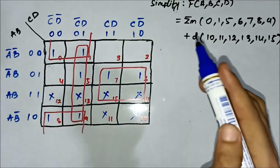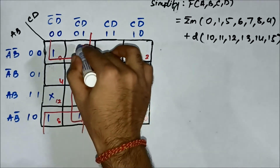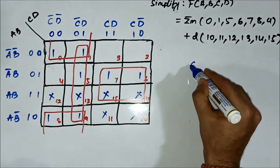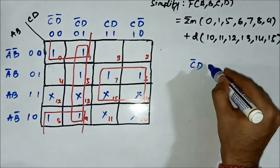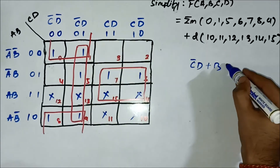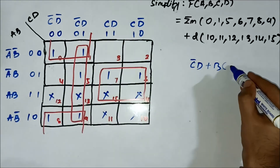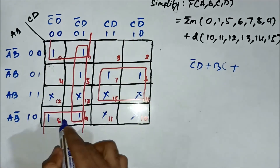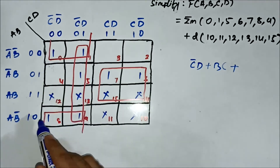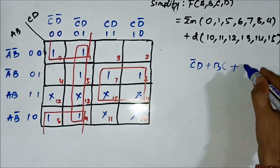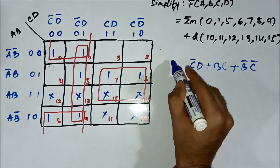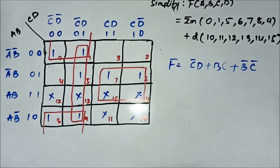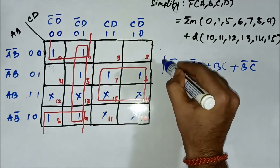Now we identify the common variables. For this quad, in the horizontal side we have C̄D common; the vertical side has nothing. For the next quad, in the horizontal side we have B common, and in the vertical side we have C common. For the quad involving cells 0, 1, 8, and 9, in the horizontal side we have B̄ common, and in the vertical side we have C̄ common. So the simplified boolean expression is C̄D + BC + B̄C̄.